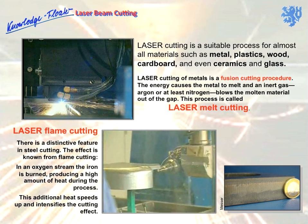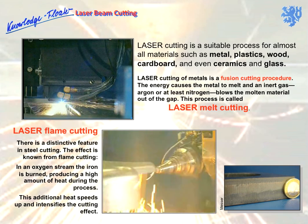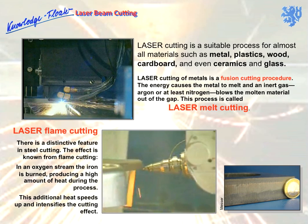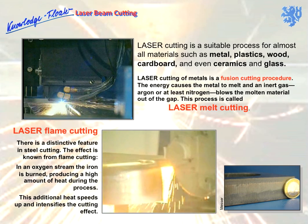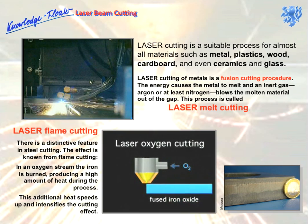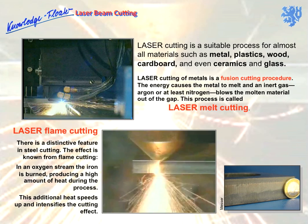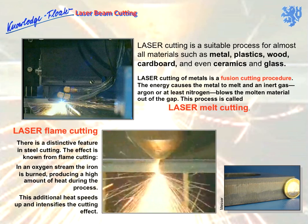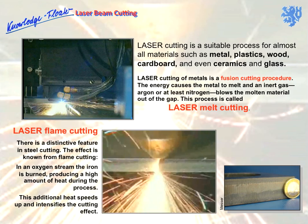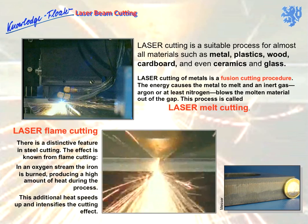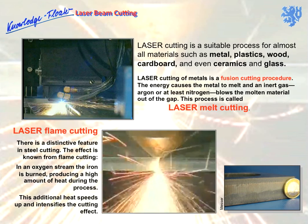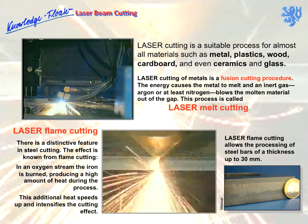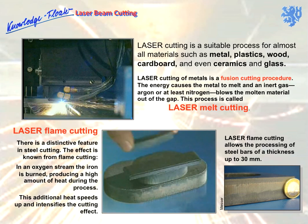Steels are a special case. A phenomenon familiar from flame cutting is employed: in an oxygen stream, the iron is burned, as evident here in an open cut, producing a great deal of heat in the process. This additional heat speeds up and intensifies the process, which is now called laser flame cutting. This allows steel with a thickness of up to 30 millimetres to be cut.